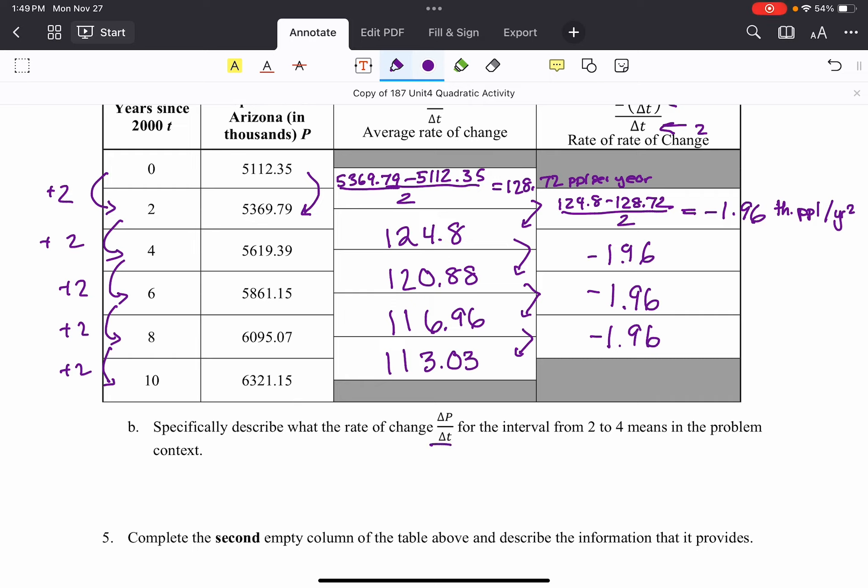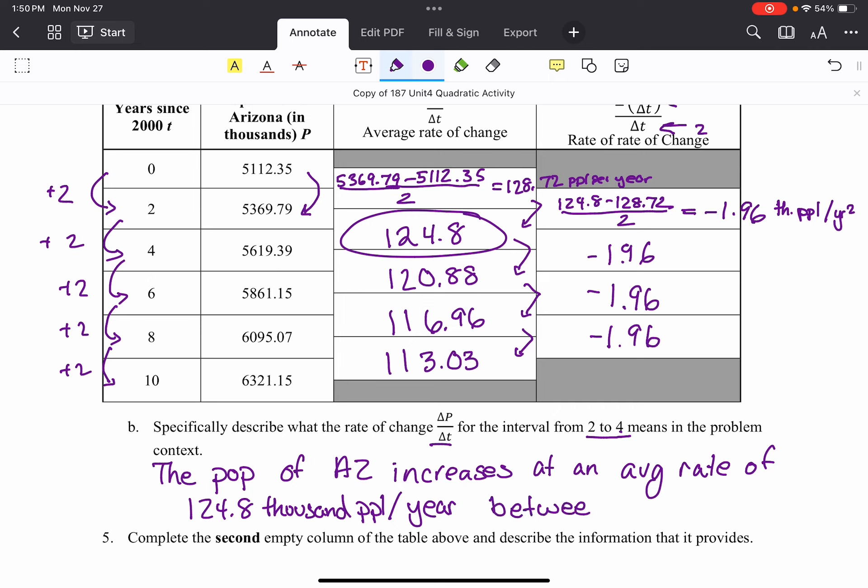And so let's just interpret these numbers and what they represent. So what is the rate of change from 2 to 4 mean in the context of the problem? Well, the population of Arizona increases at an average rate of, and then we're looking at this value right here, 124.8 thousand people per year between, and you have to give the years because the rate's not constant, 2002 and 2004.